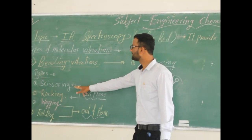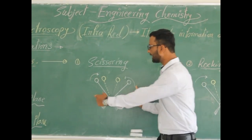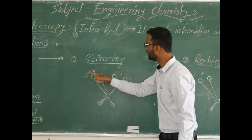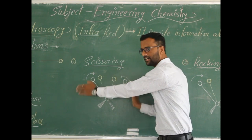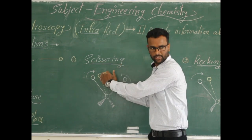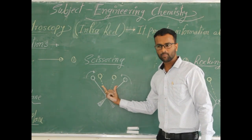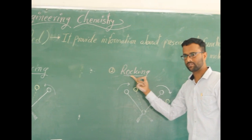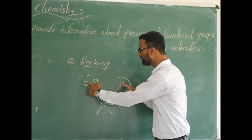Let us see them one by one. First one: scissoring. In scissoring, atoms move in opposite directions — one atom moving clockwise, the other anticlockwise — towards each other or away from each other. In scissoring, bond angle decreases.